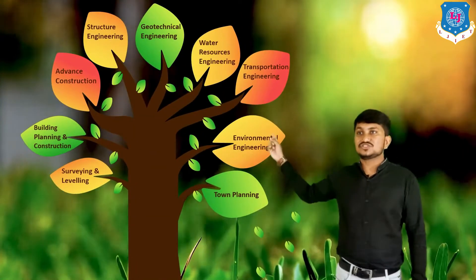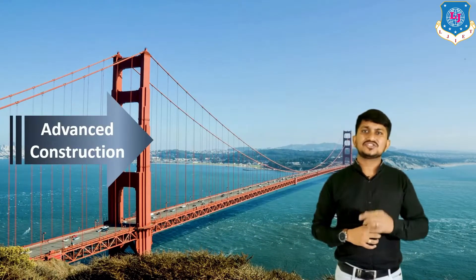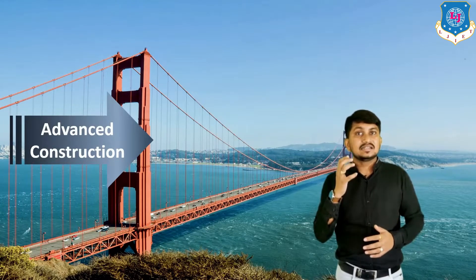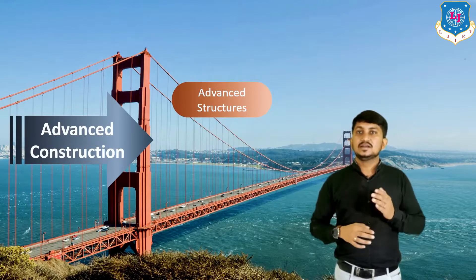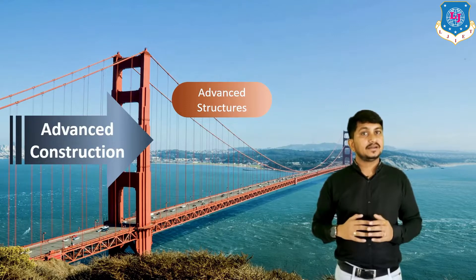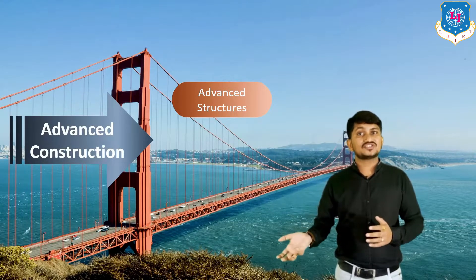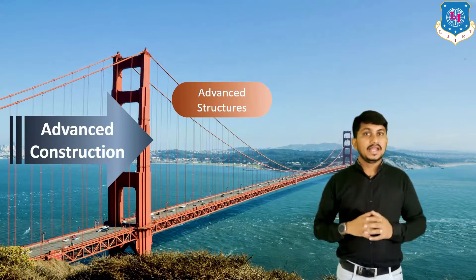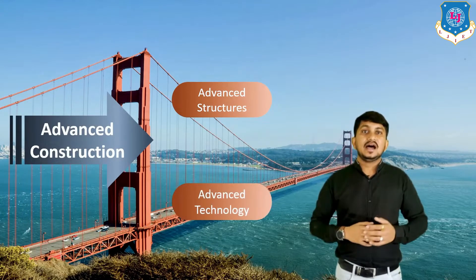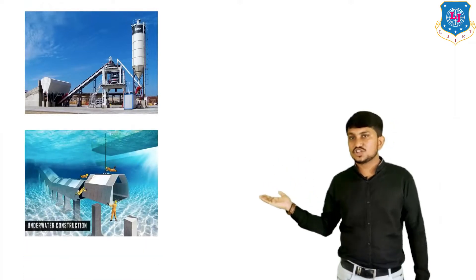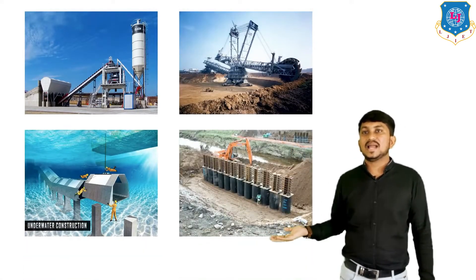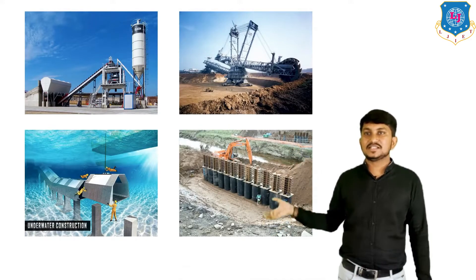Next we will discuss advanced construction. Advanced construction is separated from building construction because it involves structures like dams, bridges, tunnels, and tall buildings, for which techniques used in standard building construction cannot be used effectively. Advanced techniques followed by civil engineers include concrete mixing plants, underwater construction, large-scale excavators, and pile foundations.